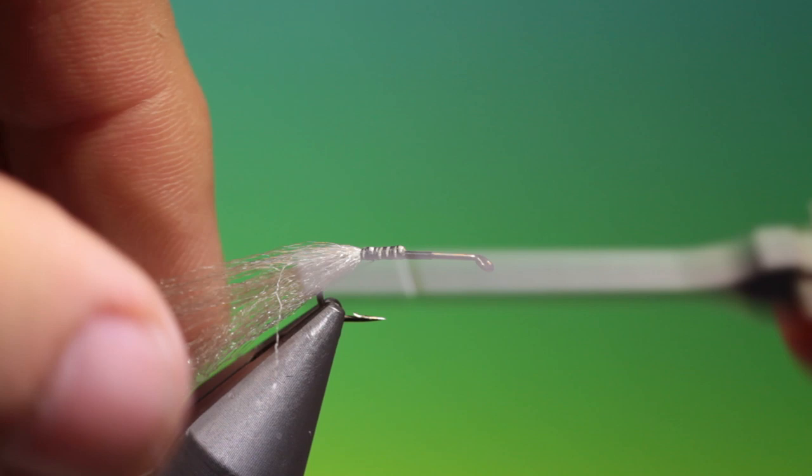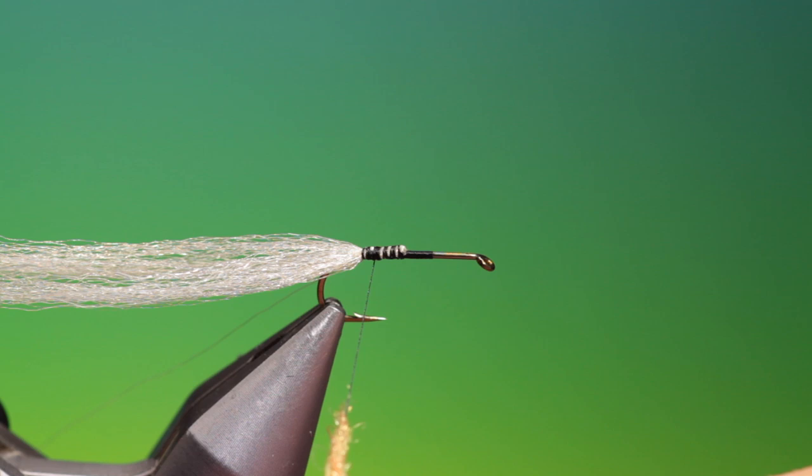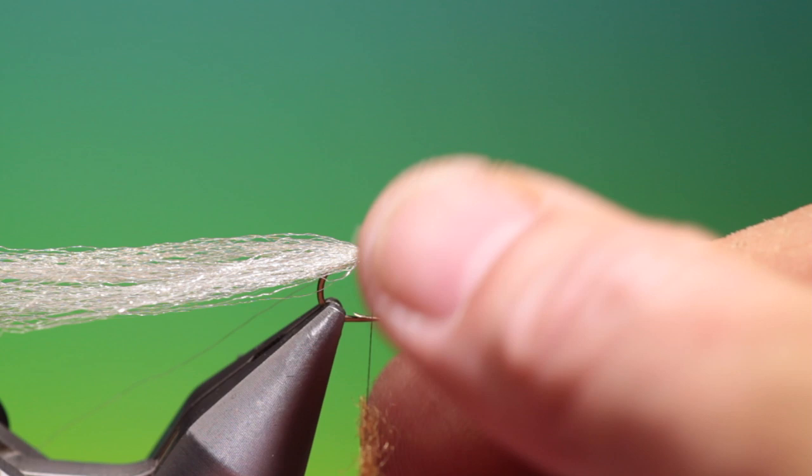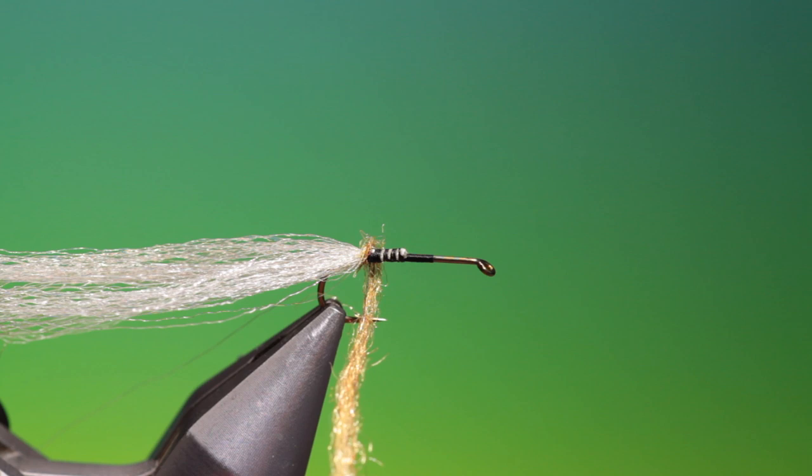Then I need some olive - this is Antron dubbing again. You can make the body whatever color you wish, but these are my favorite colors. Just pull out that end, twist it on, and then I'll push it up, catch it in, and then tighten all this up.